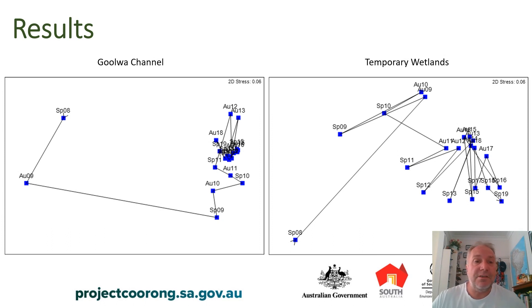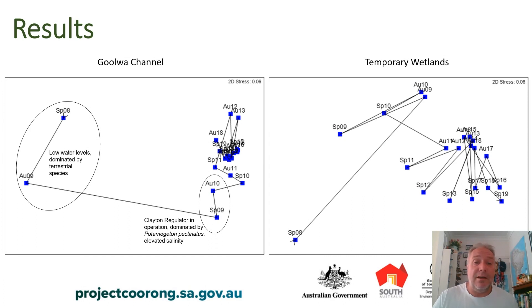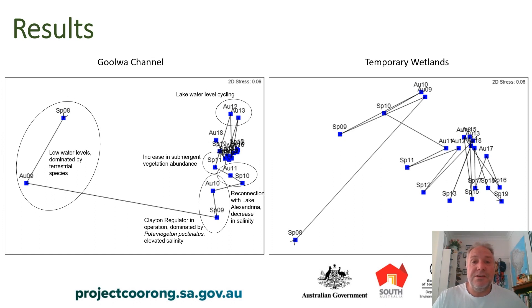Looking at Goolwa Channel: in spring 2008 and 2009 we had low water levels and the vegetation was dominated by terrestrial species. The Clayton Regulator was built, water levels rose, but there was elevated salinity and the plant community was dominated by the submerged plant Potamogeton pectinatus. After reconnection with Lake Alexandrina and a decrease in salinity, there was an increase in submergent vegetation. Two data points represented low water levels brought about by water level cycling to reduce salinity in Lake Albert, and pretty much since then there's been very little change in Goolwa Channel vegetation.